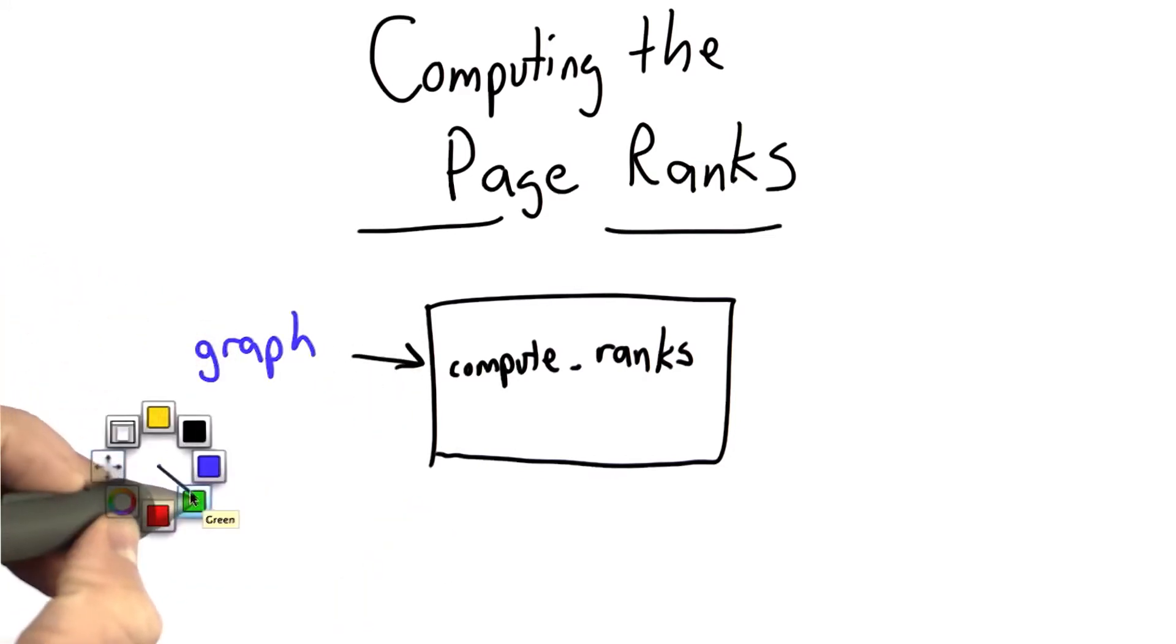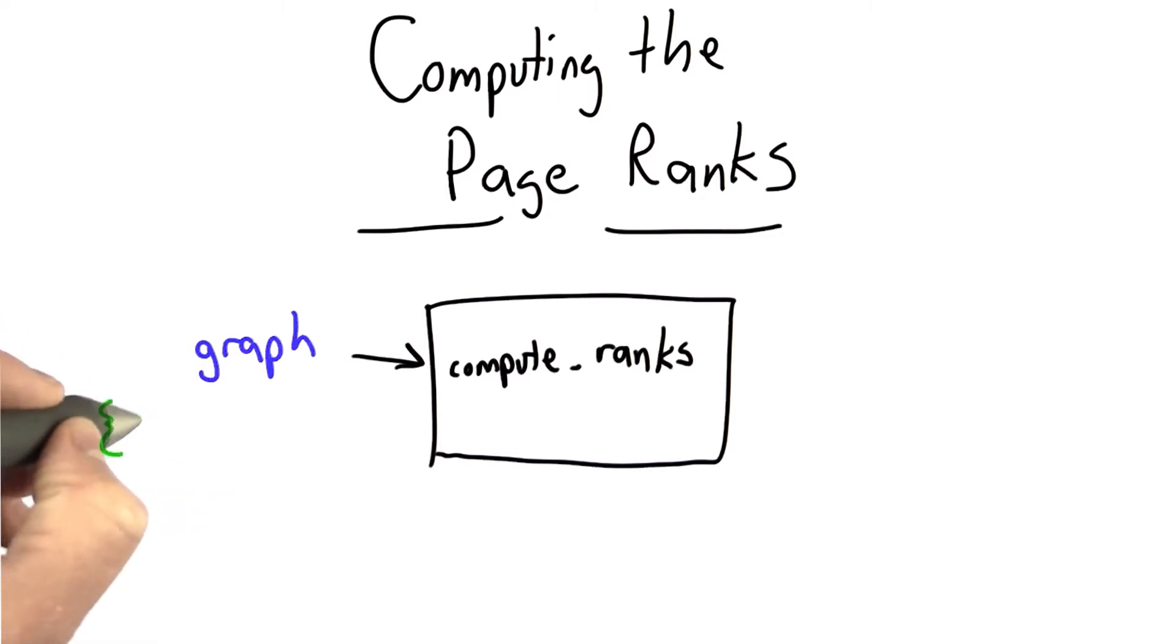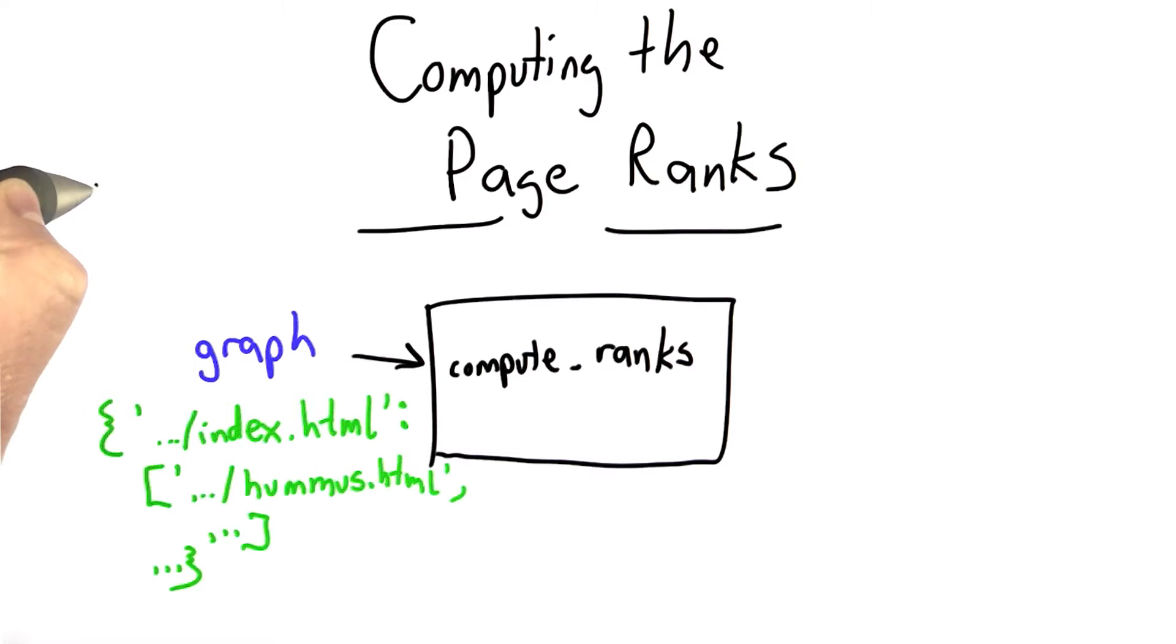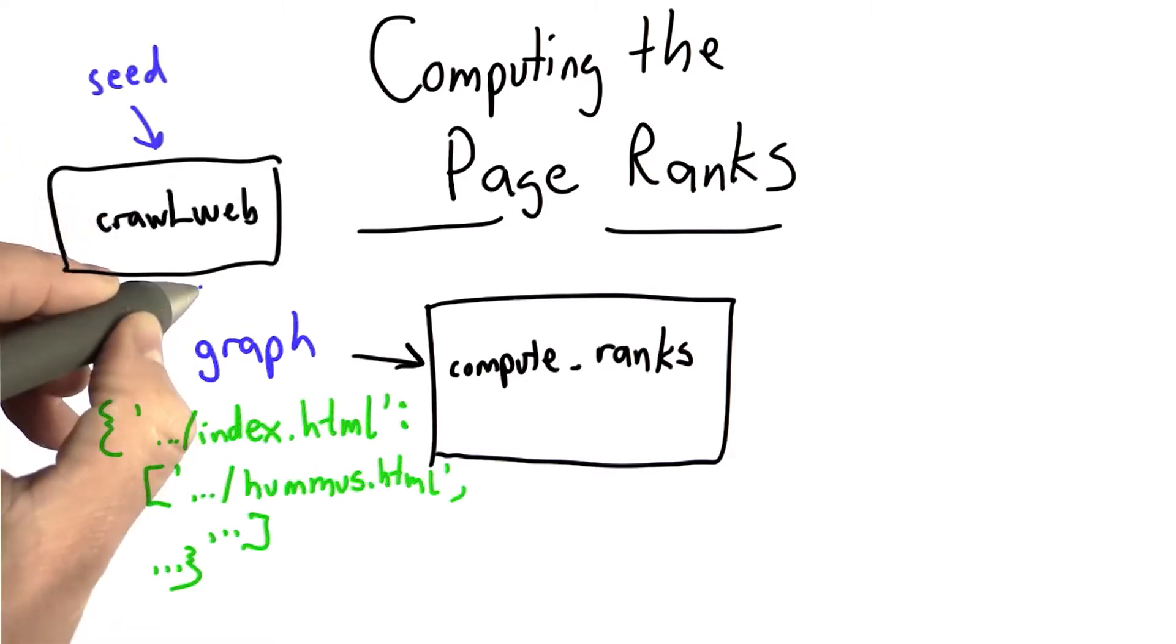As an example, we have our graph that has the URLs and each URL followed by the list of pages that it links to. This is the graph that was produced by our crawler. Crawl web produced as outputs a graph as well as an index. We're going to use the graph as the input to compute_ranks.